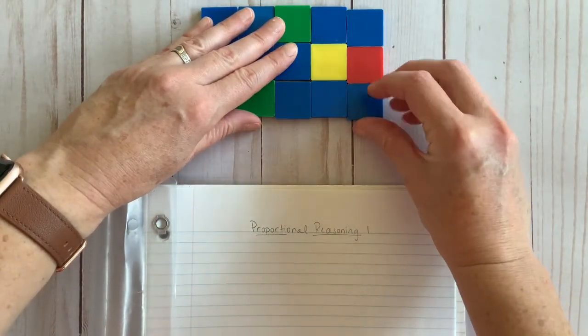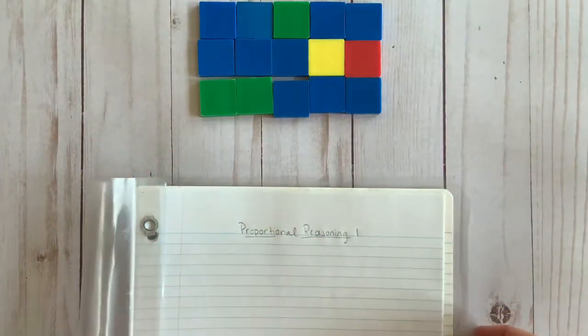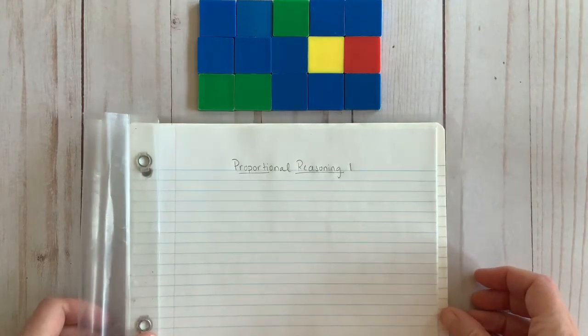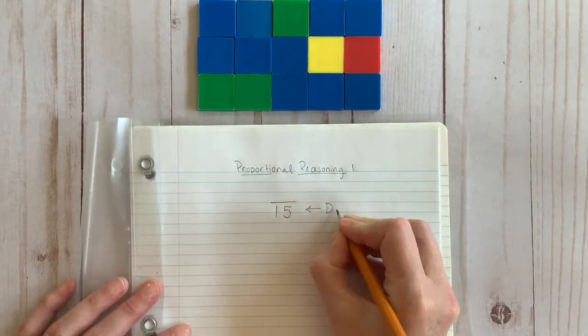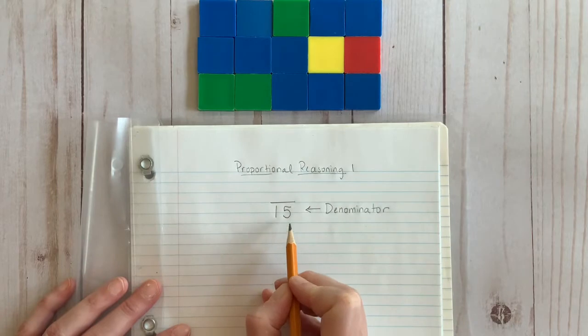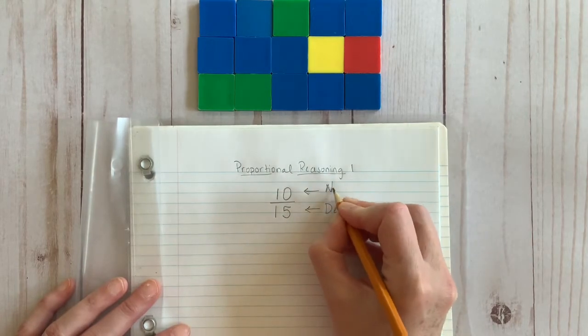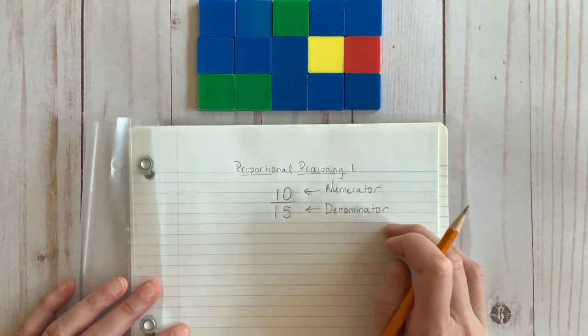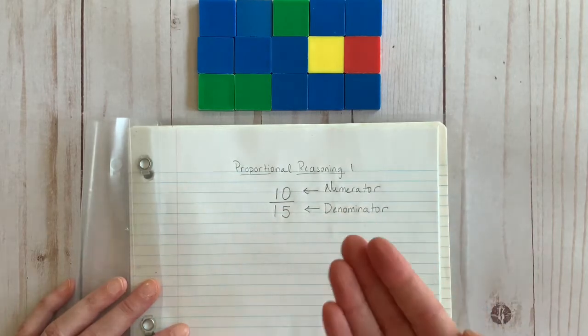Now the thing about fractions is that they have a nice basic system for recording the part compared to the whole. The denominator is for recording the whole. The numerator is for recording the part. Again, nice and easy.